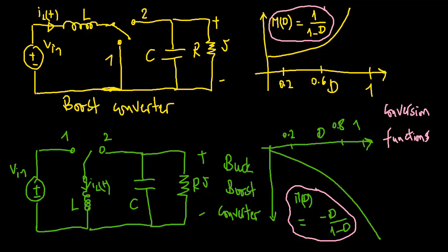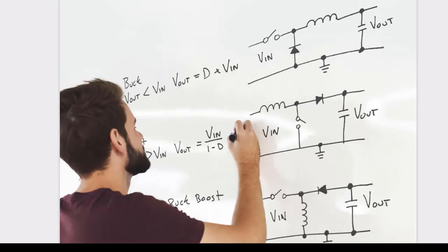It is indeed possible to produce any desired DC output voltage using a passive network of only inductors, capacitors, and embedded switches.